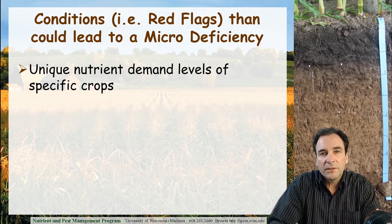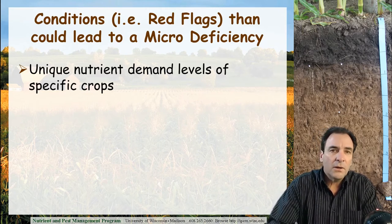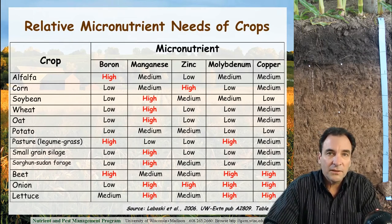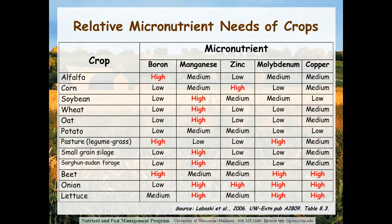Conditions or red flags that could lead to a micronutrient deficiency in a crop production system: the most important would be unique demand levels of specific crops. We need to know what the demand is of the crops we're growing for a given micronutrient. This is a table from the A2809 Nutrient Recommendations publication from UW Extension Soils Department, highlighting in red the major crops and their need for a given micronutrient. Alfalfa has a high need for boron; zinc for corn and manganese for soybean. If you're involved in managing specialty crops or vegetable crops, please be aware whether they have unique micronutrient demands — you can find that out through the literature and also by looking at A2809.